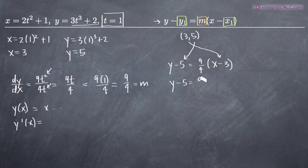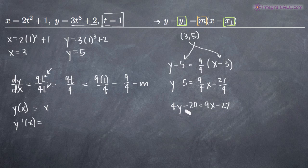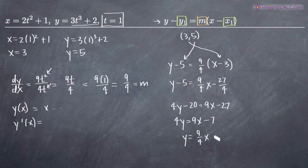Expanding gives y minus 5 equals 9 fourths x minus 27 over 4. Multiplying through by 4 gives 4y minus 20 equals 9x minus 27. Moving the negative 20 to the right-hand side gives 4y equals 9x minus 7. Dividing by 4 to get slope-intercept form, we end up with y equals 9 fourths x minus 7 fourths. That's the equation of our tangent line in slope-intercept form.